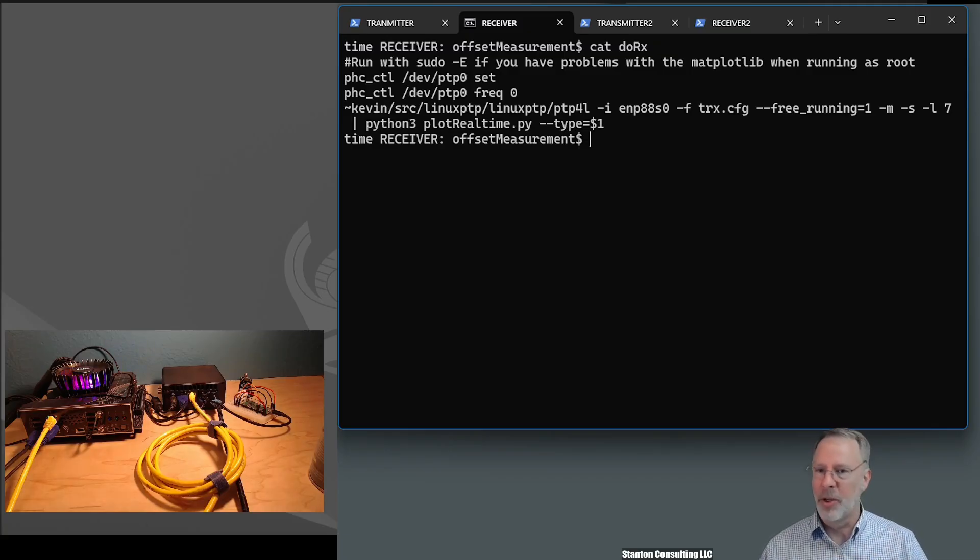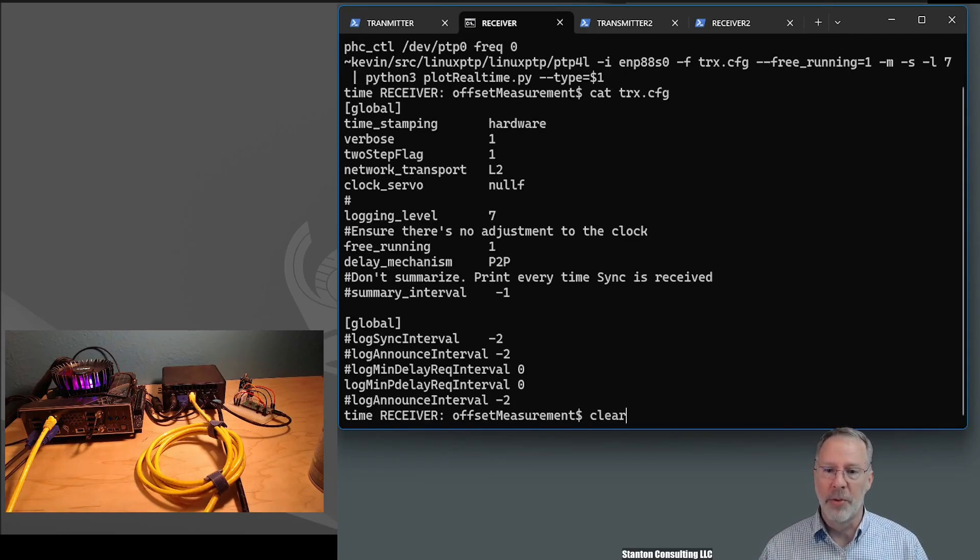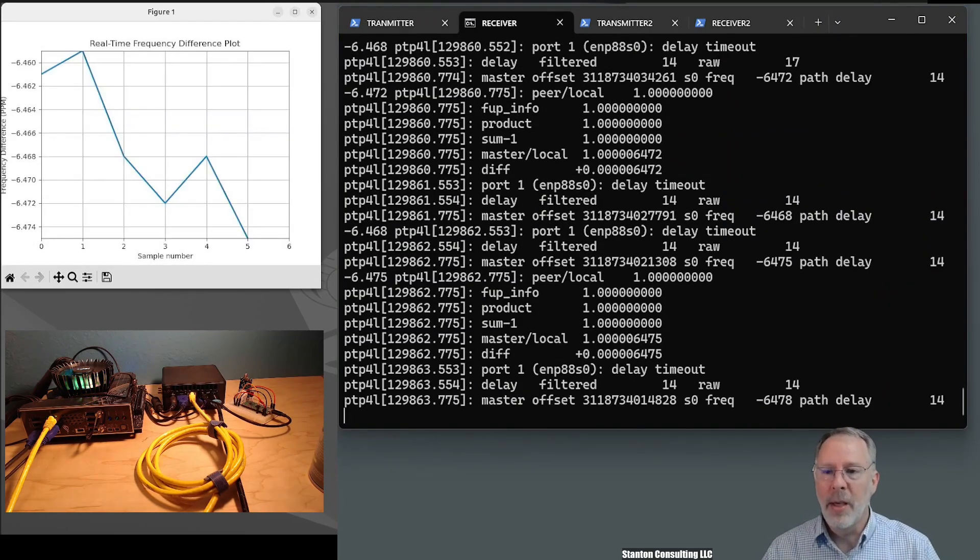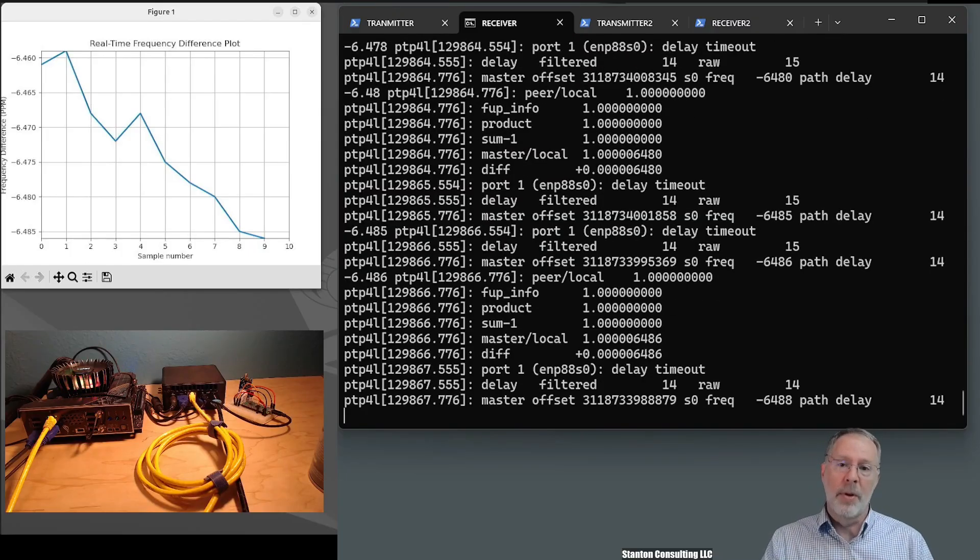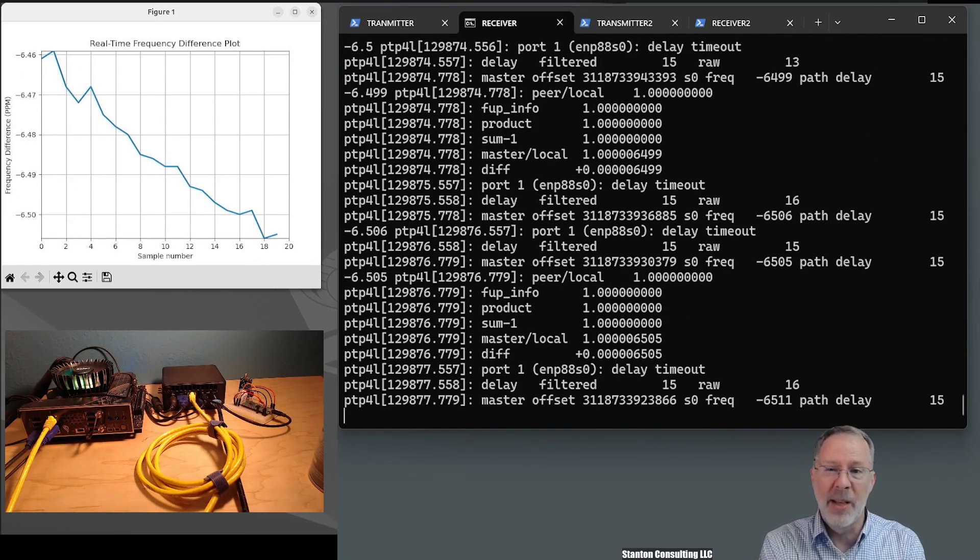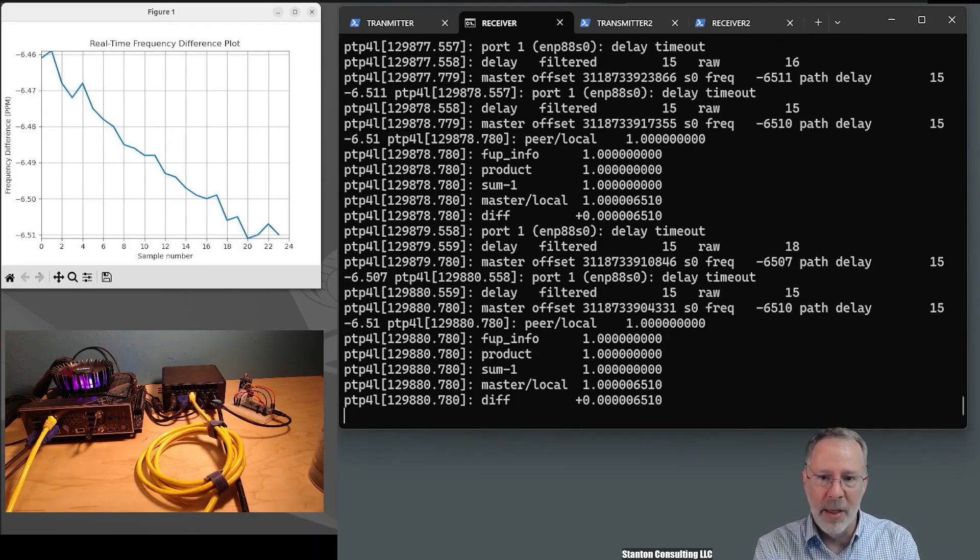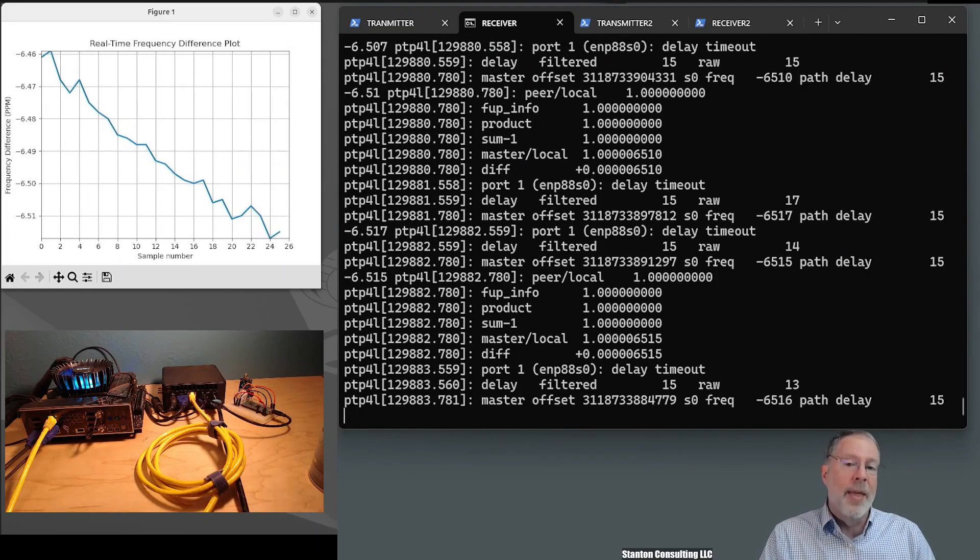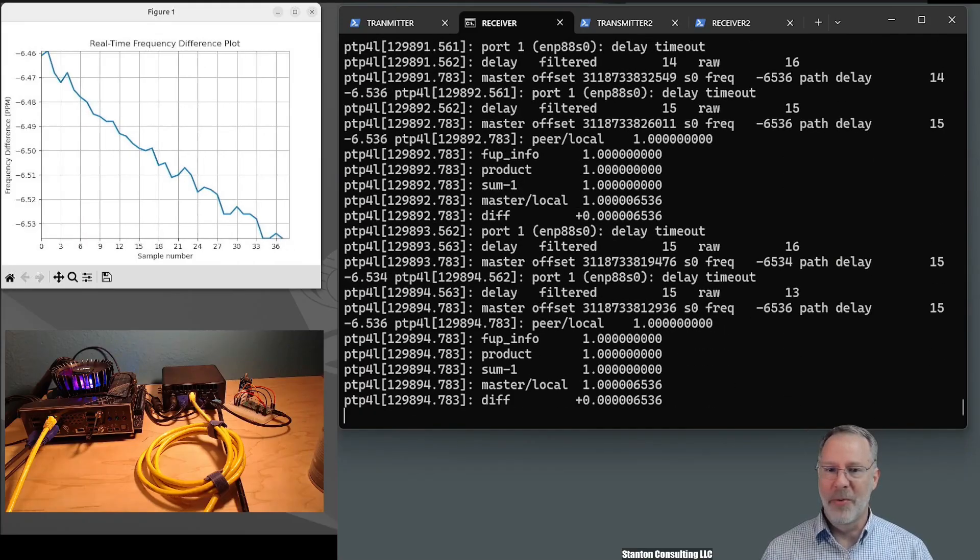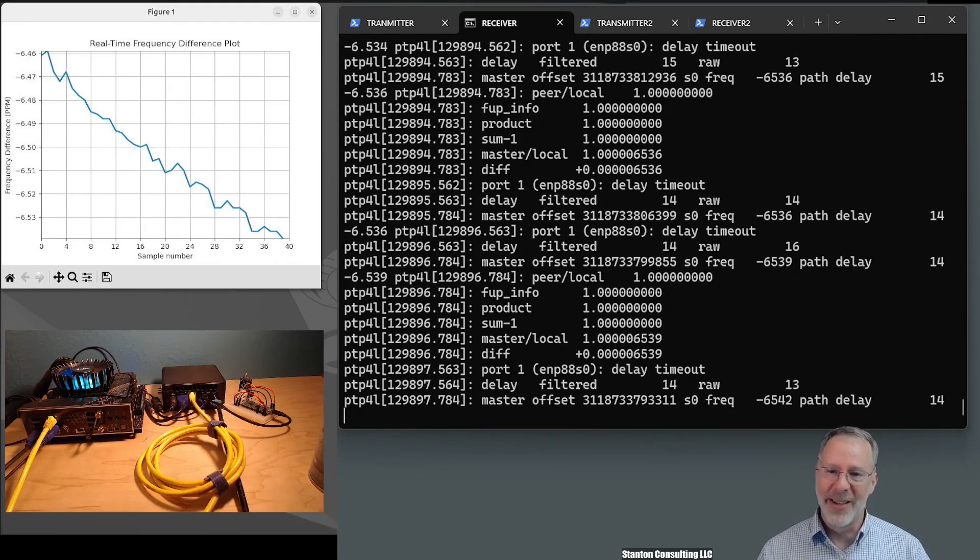And this is just a little script that runs PTP4L. Actually, I modified the source code so that it would print in a little better way for the animation or for the real-time logging. There's also a configuration file for Linux PTP, which is here if you're interested. But let's do Rx and I'm going to plot the frequency in real-time. So here we go. So we can see the offset that the time receiver is observing is about six and a half hertz per million. So about six microseconds every second, six millionths of a second, the receiver is losing that amount of time in that amount of time. And it's getting increasingly negative, maybe because my computer fan and GPU are running and it's getting warmer in here.